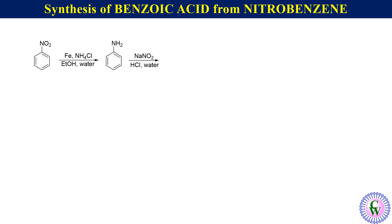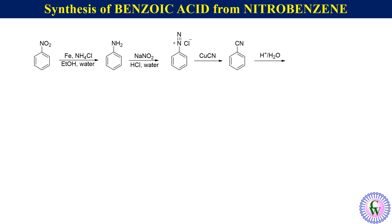Diazotization of aniline with sodium nitrite in HCl will give benzene diazonium chloride, which upon reaction with cuprous cyanide will give benzonitrile. This conversion of benzene diazonium salt to benzonitrile using cuprous cyanide is called the Sandmeyer reaction. Hydrolysis of benzonitrile will then give benzoic acid.